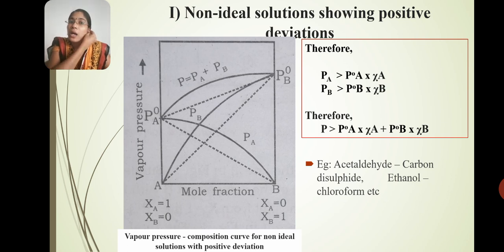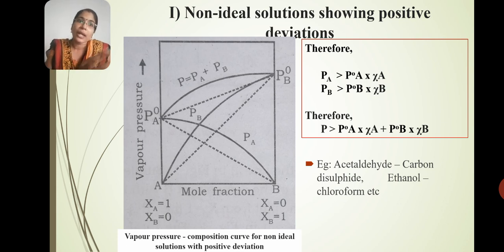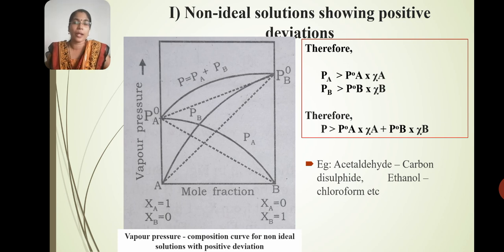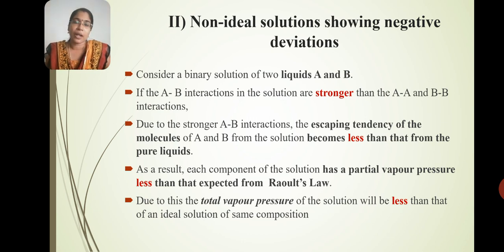Draw and explain the non-ideal solutions. Draw and explain the vapor pressure composition curve for non-ideal solution showing positive deviations. What is the non-ideal solution? The non-ideal solution is showing positive deviation.